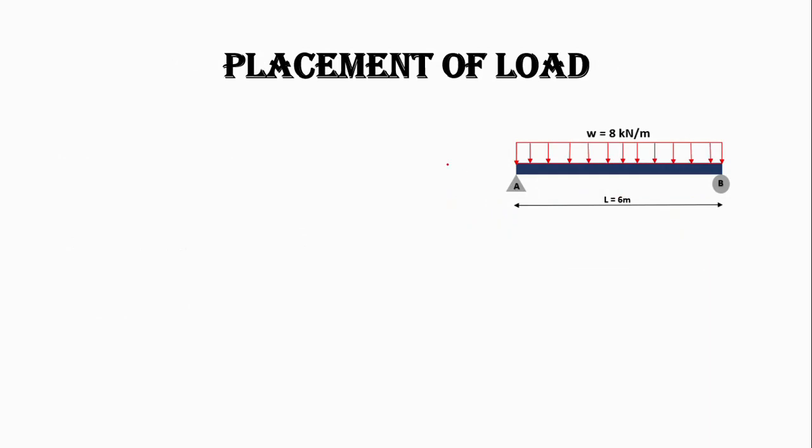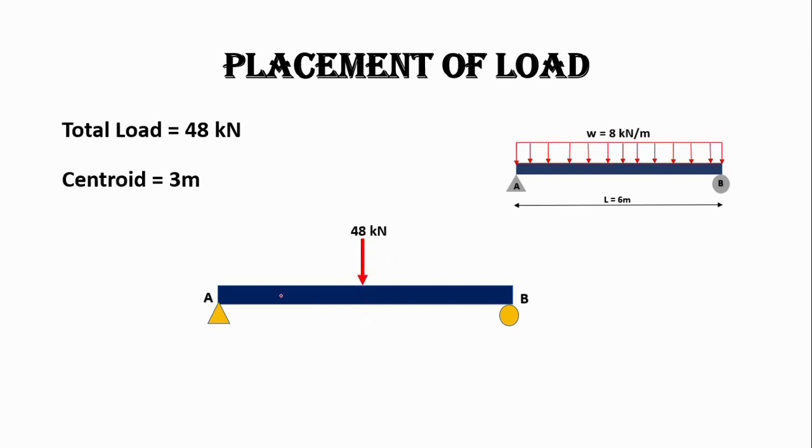Now we will place the load. This is our beam AB. The total load is 48 kilonewton that is acting from the centroid, 3 meters from each side.